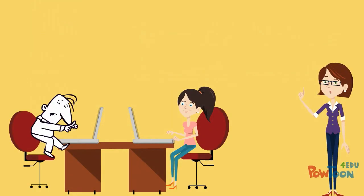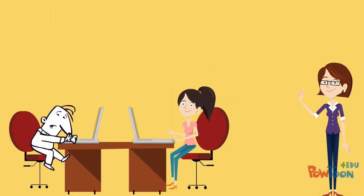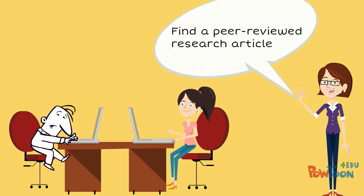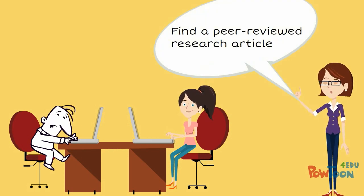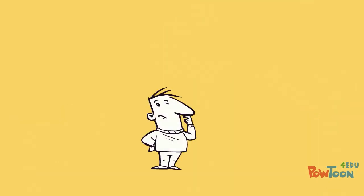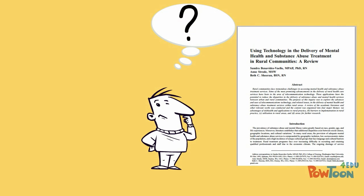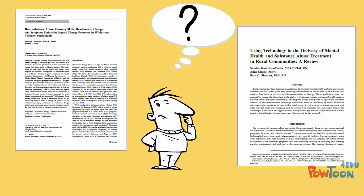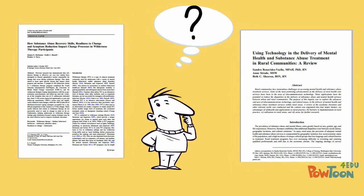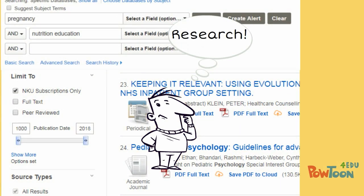In his sociology classes, Jacob was often required to use peer-reviewed research articles. The first time he was asked to find a research article, he was a little confused. Was a research article the same as a scholarly article? Were all articles that he found in a database research articles?